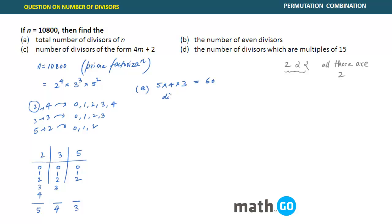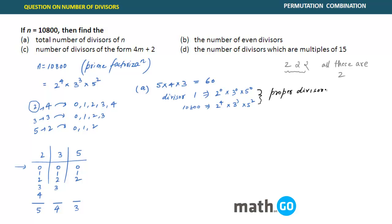If you talk about a divisor, 1 is a divisor of this number — you obtain it when 2 is raised to power zero, multiplied by 3 raised to power zero, into 5 raised to power zero. The number itself will also be a divisor — you obtain it when 2 is 4 times, 3 is 3 times, and 5 is 2 times. Mind it — these two numbers are not counted as proper divisors. So if somebody asks you to find the number of proper divisors, the answer is 60 minus 2, which is 58 proper divisors, because 1 and the number itself are always factors of any number and we do not count them under proper factors.